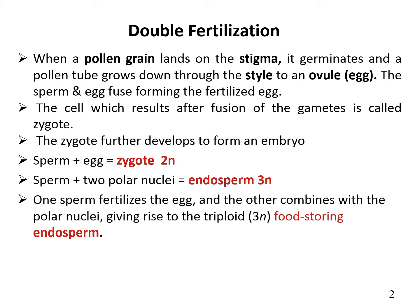Sperm plus 2 polar nuclei form the endosperm, which is 3N. One sperm fertilizes the egg, and the other combines with the polar nuclei, giving rise to the triploid 3N, fast-growing endosperm.